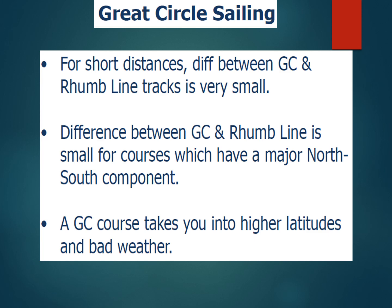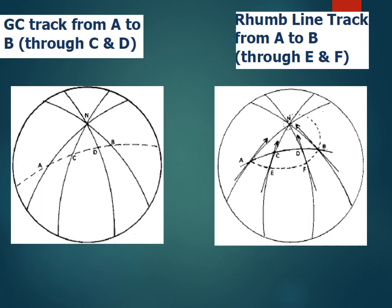For courses which have a major north-south component, the difference between great circle and rhumb line is small. The problem is that a great circle course takes you into higher latitudes and bad weather, because of which the great circle is not always the best course to follow, but it is definitely the shortest between two points — especially for large distances across the Atlantic. If you look at the figure here, it shows a great circle track from A to B through C and D.